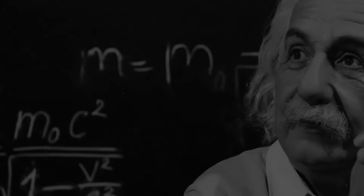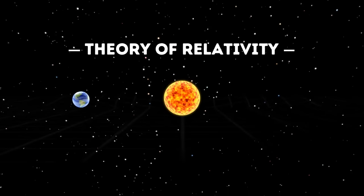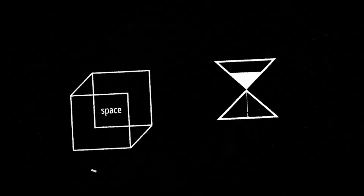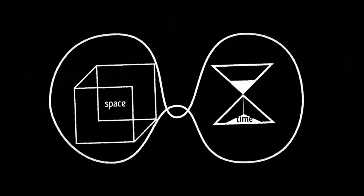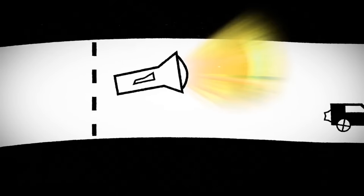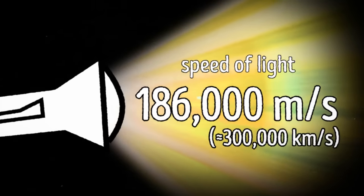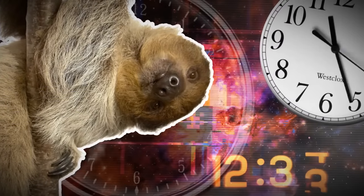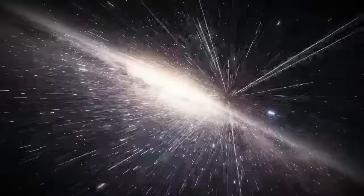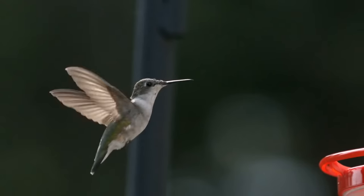More than 100 years ago, Albert Einstein came up with a theory about how time works — the theory of relativity. According to it, space and time are linked together. Another point is that our universe has a set speed limit: nothing can move faster than the speed of light, which is 186,000 miles per second. The theory of relativity also claims that the faster you move, the slower you experience time.